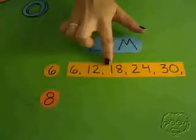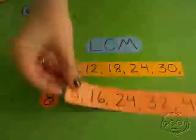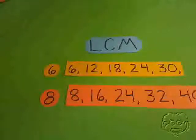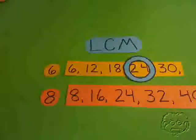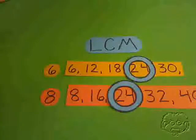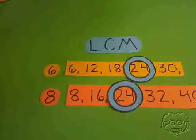It might be even smaller than their product. For example, if we look at the numbers 6 and 8: multiples of 6 are 6, 12, 18, 24, and 30, and multiples of 8 are 8, 16, 24, 32, and 40. So what's the smallest number that appears on both lists? 24 is. So 24 would be the least common multiple of 6 and 8. The product of 6 and 8 is 48, so 24 is actually smaller than the product of 6 and 8, even though it's their least common multiple.